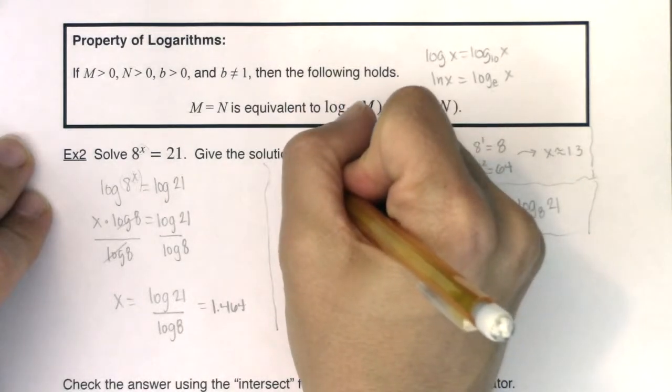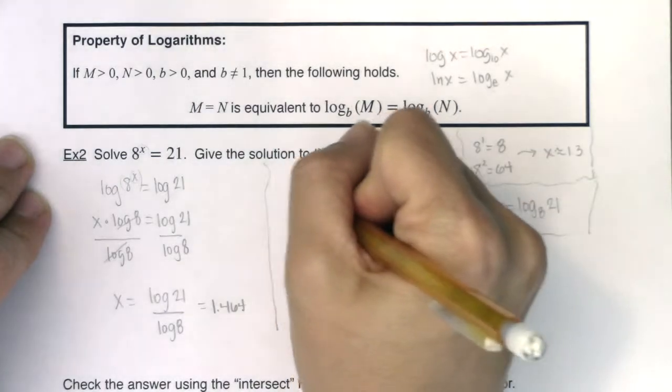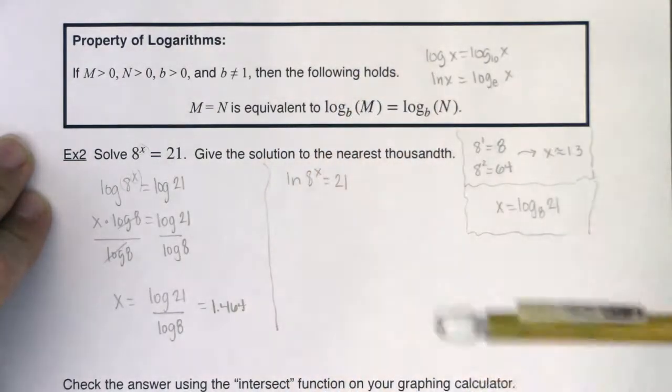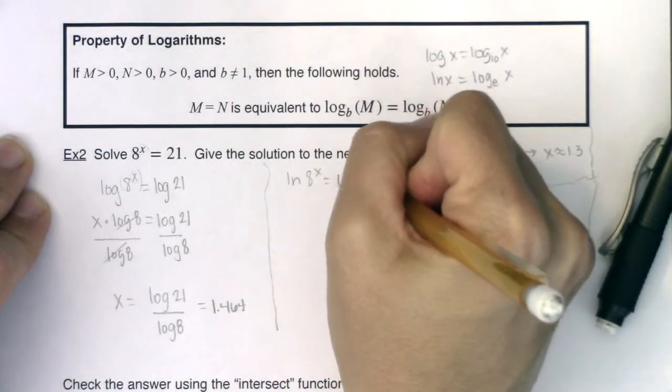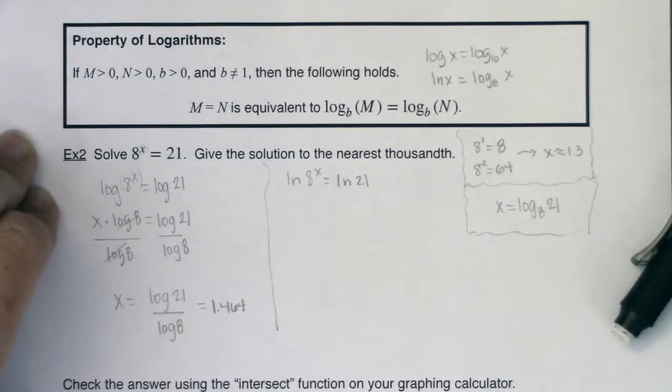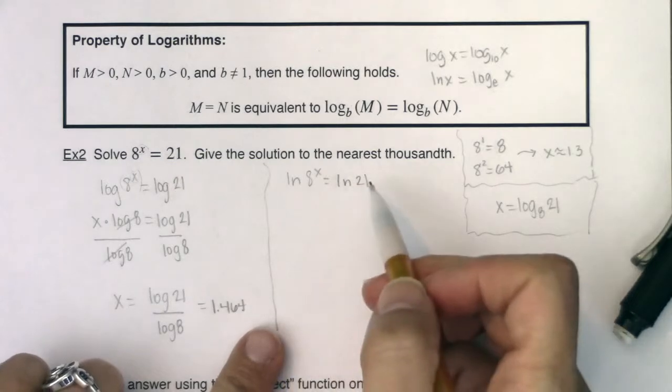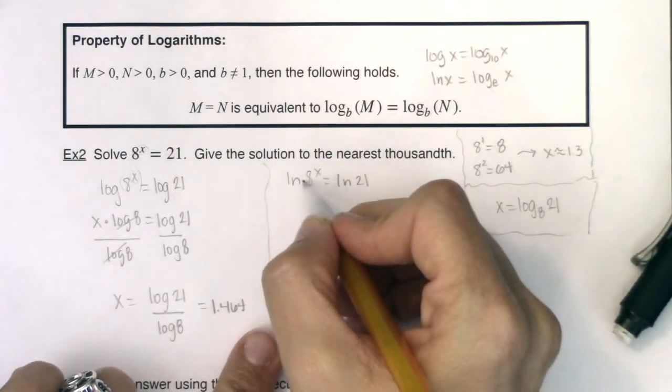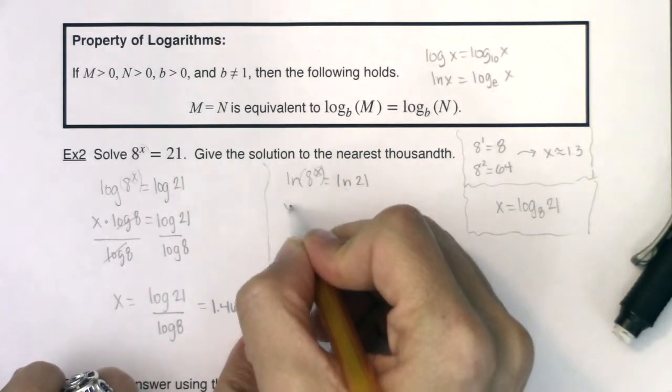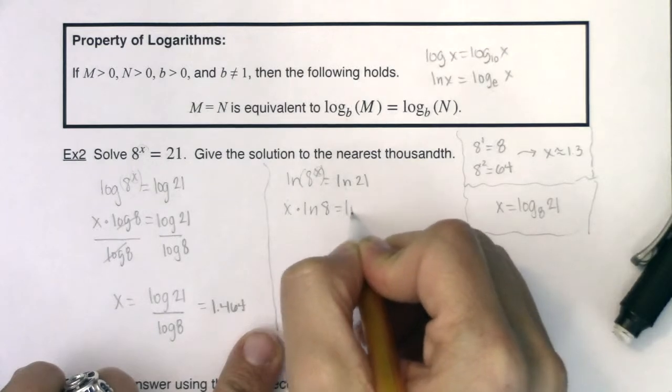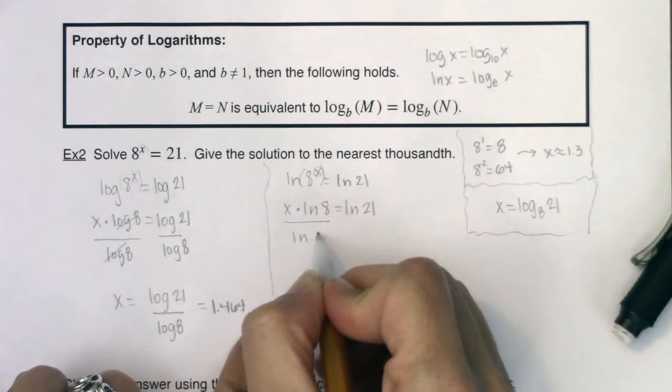What I could have done is I could have taken the natural log of both sides of this equation. So let's say I went natural log of 8^x is equal to the natural log of 21. So I'm choosing natural log this time out because I have that calculator button. Same rule applies. When you have the logarithm of a power, that exponent can come down in front as multiplication.